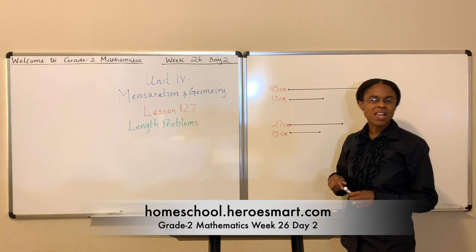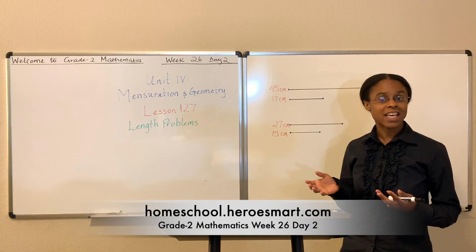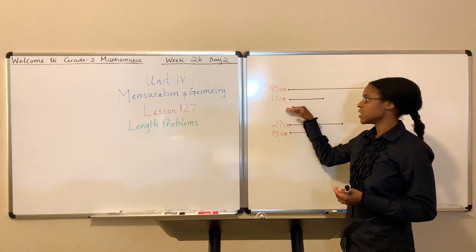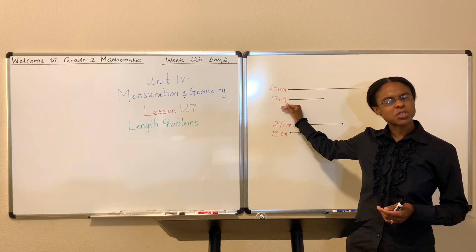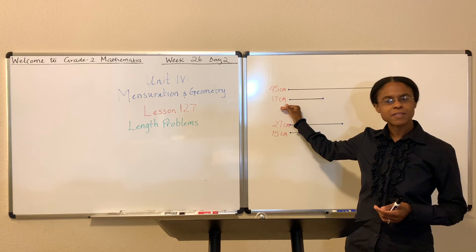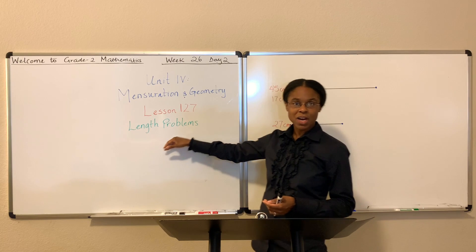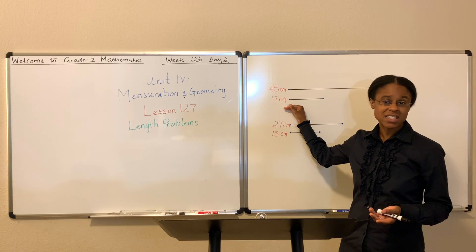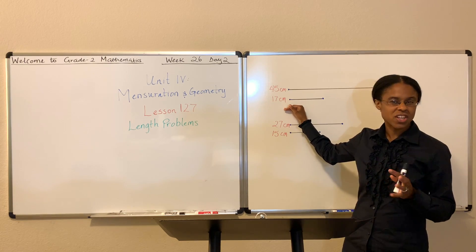If you have two lines, two strings, or two objects that have varying lengths, such as 45 centimeters and 17 centimeters, and if you want to find out what's the difference between these two lengths, well, these are what we call length problems. What you're trying to do is find the difference. You just do the same basic subtraction that you've learned, maybe starting in grade one.